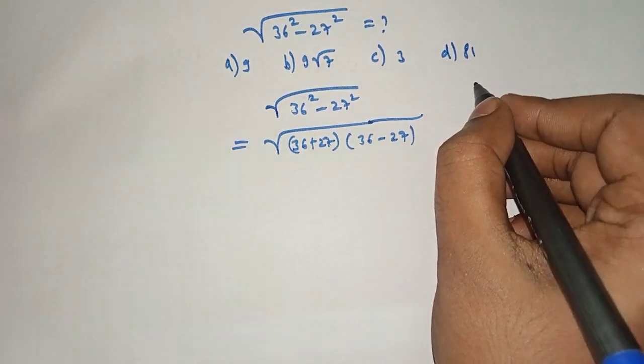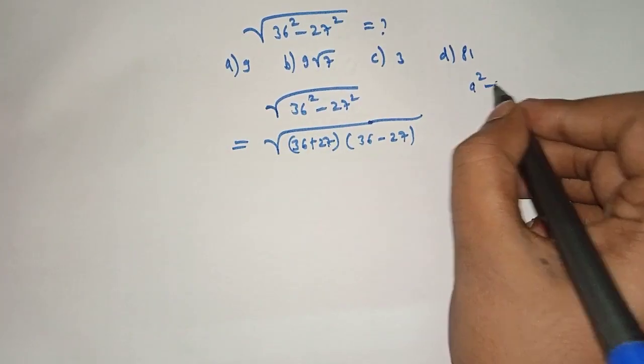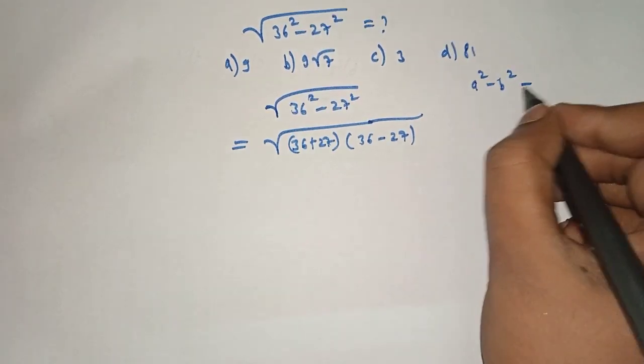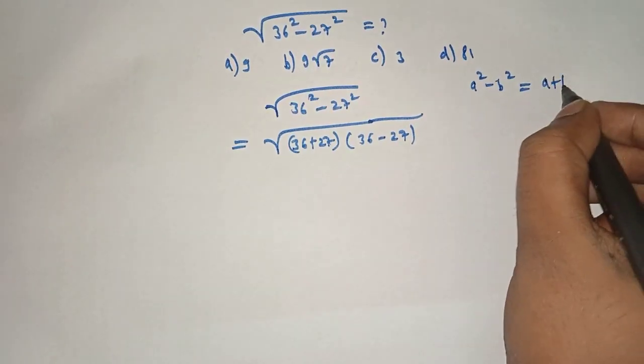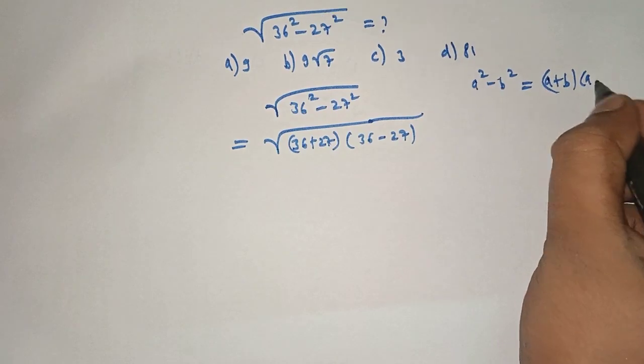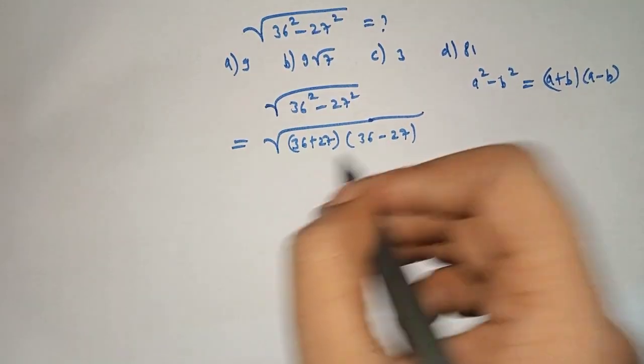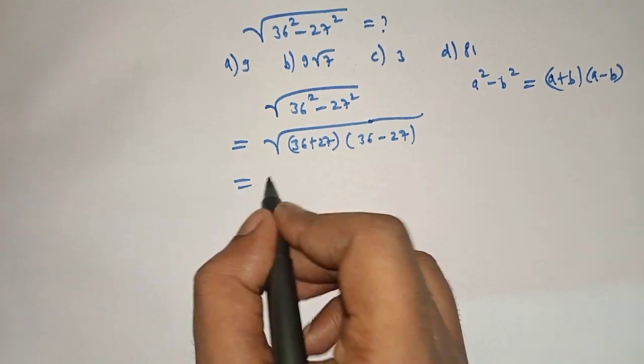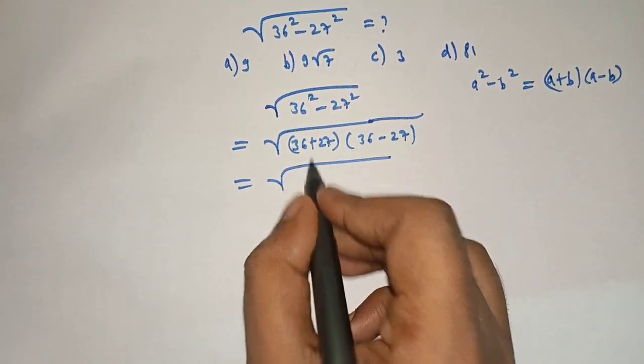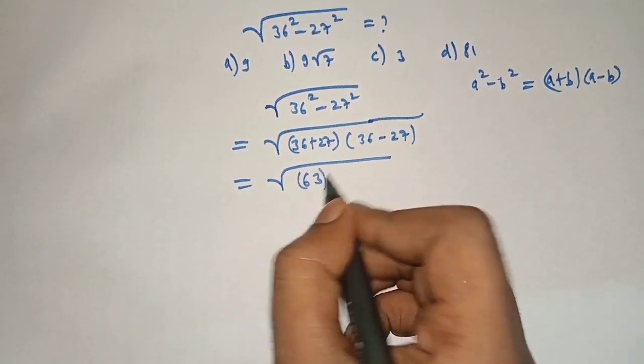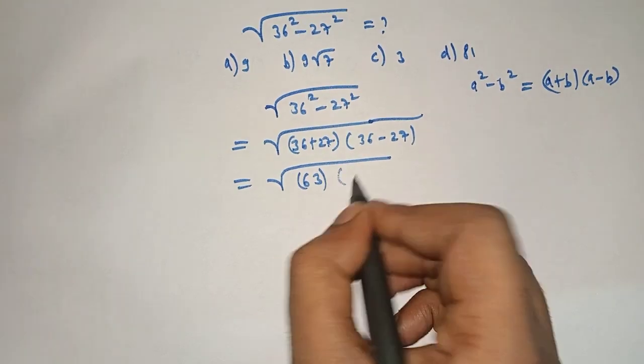Because when a raise to 2 minus b raise to 2, then it is equal to a plus b into a minus b. This applies here. Now it will be equal to under root of 63 into under root of 9.